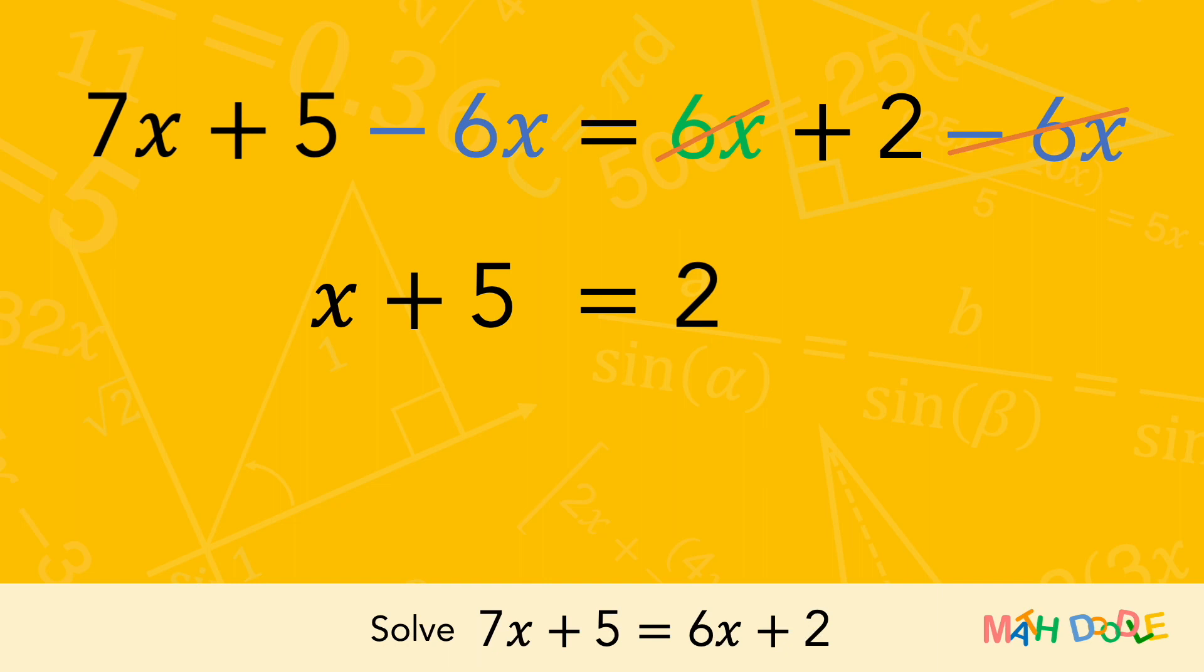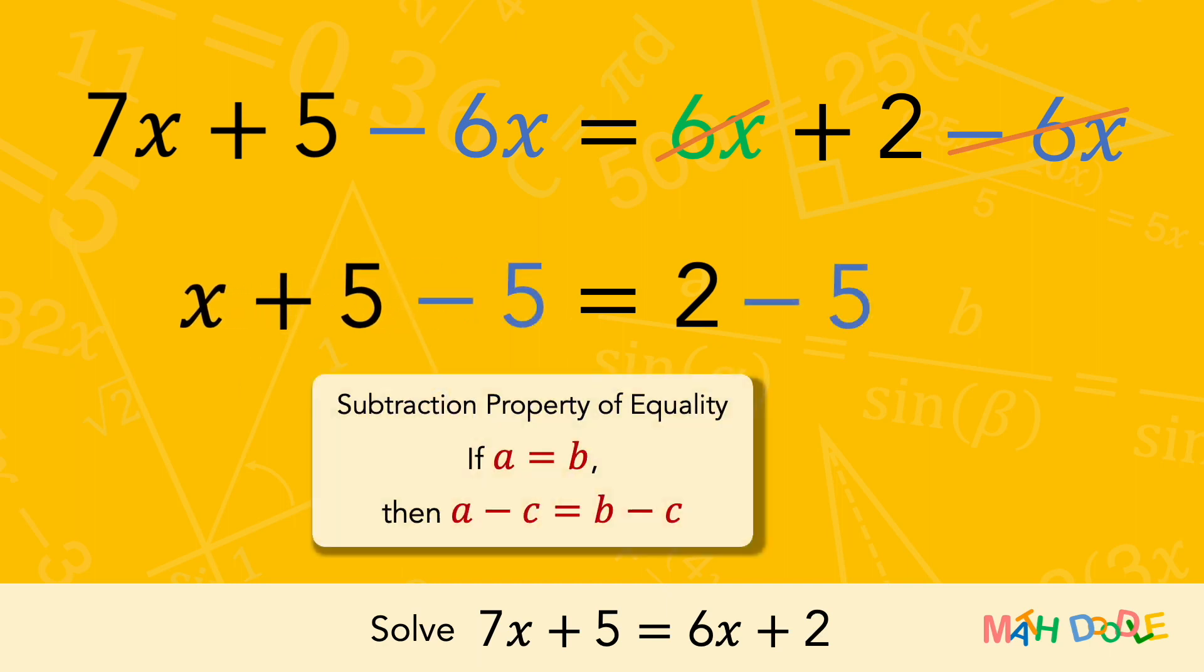To solve the equation, we are going to eliminate 5 on the left side of the equation. To do this, let's subtract 5 from both sides of the equation.